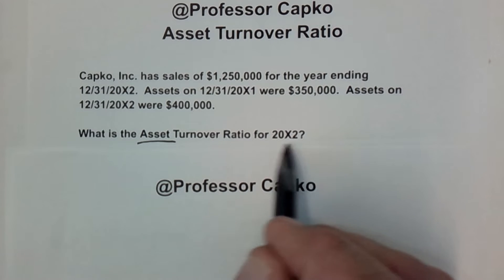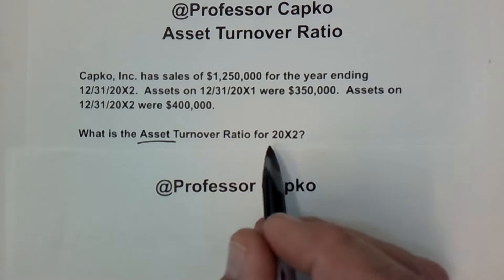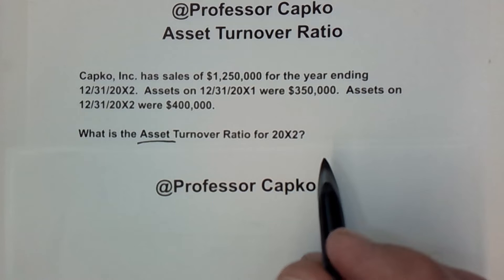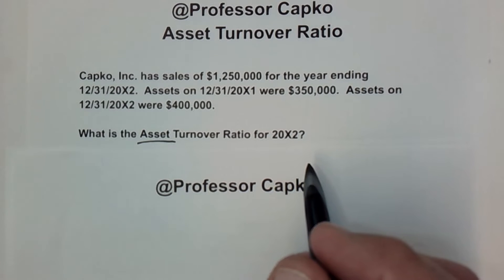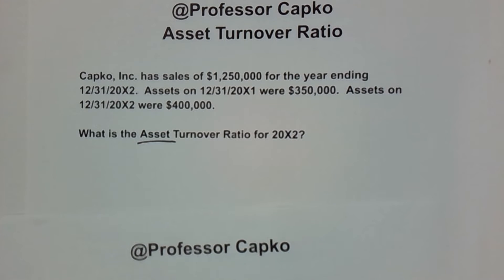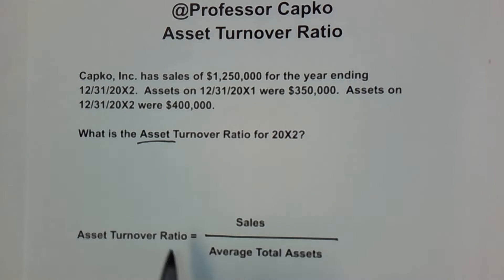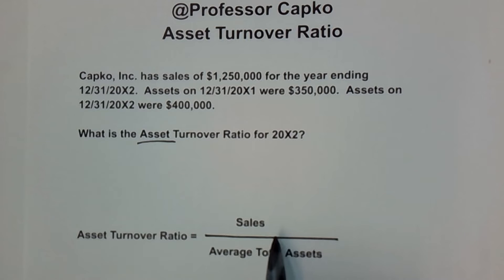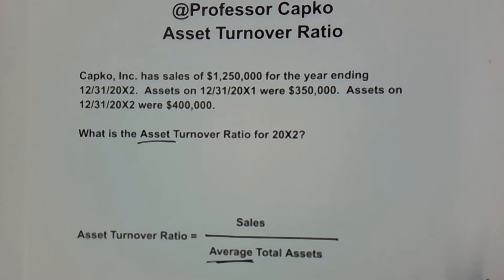Usually it's for a period of time such as a year; in this case we're looking at the year 20x2. The formula for the asset turnover ratio is: asset turnover ratio equals sales for the entire period over the average of the total assets.